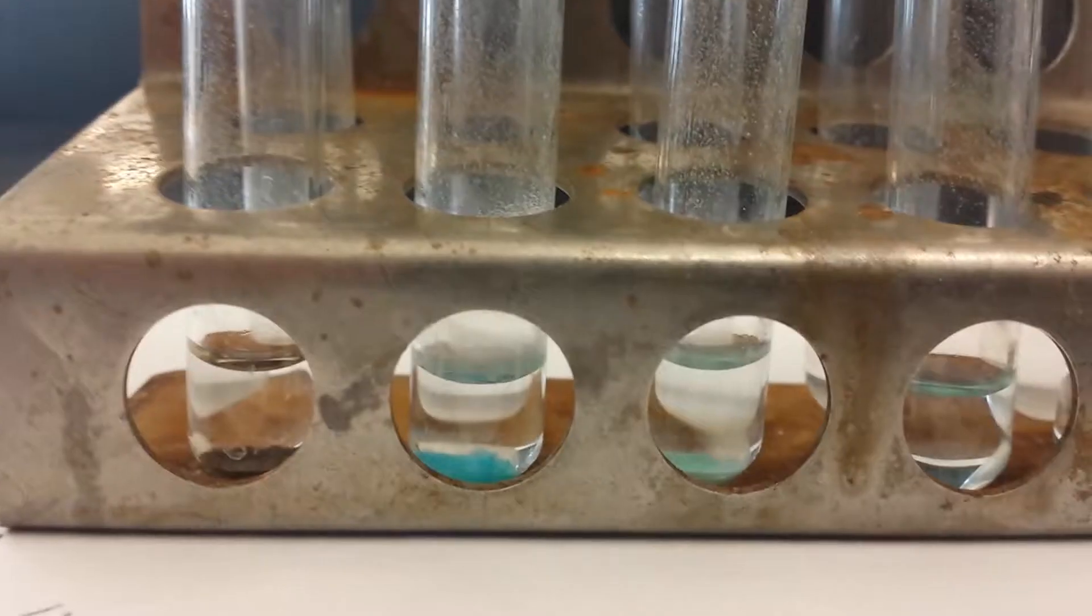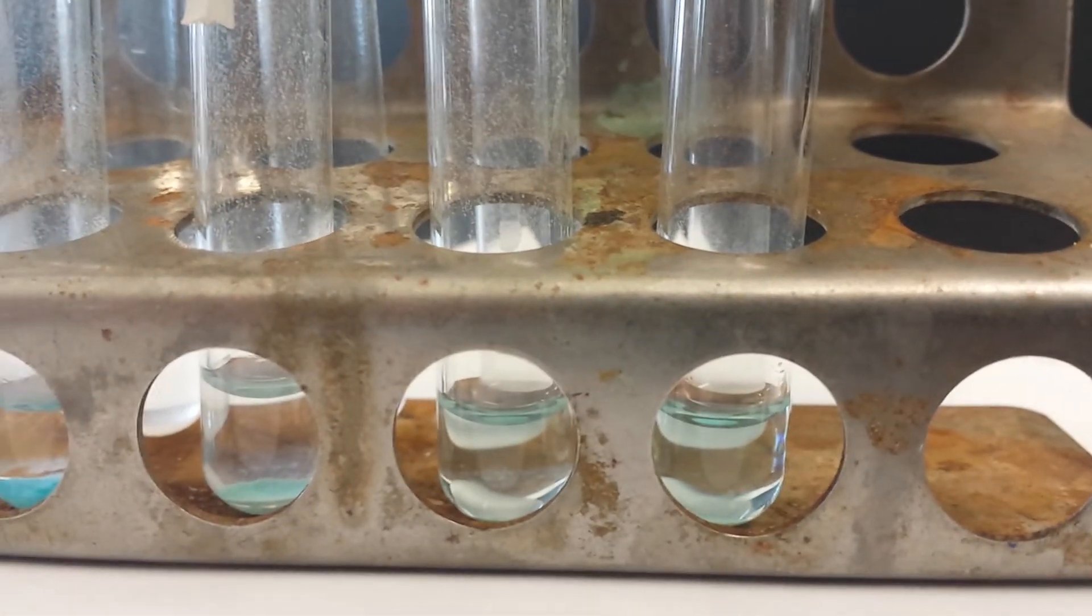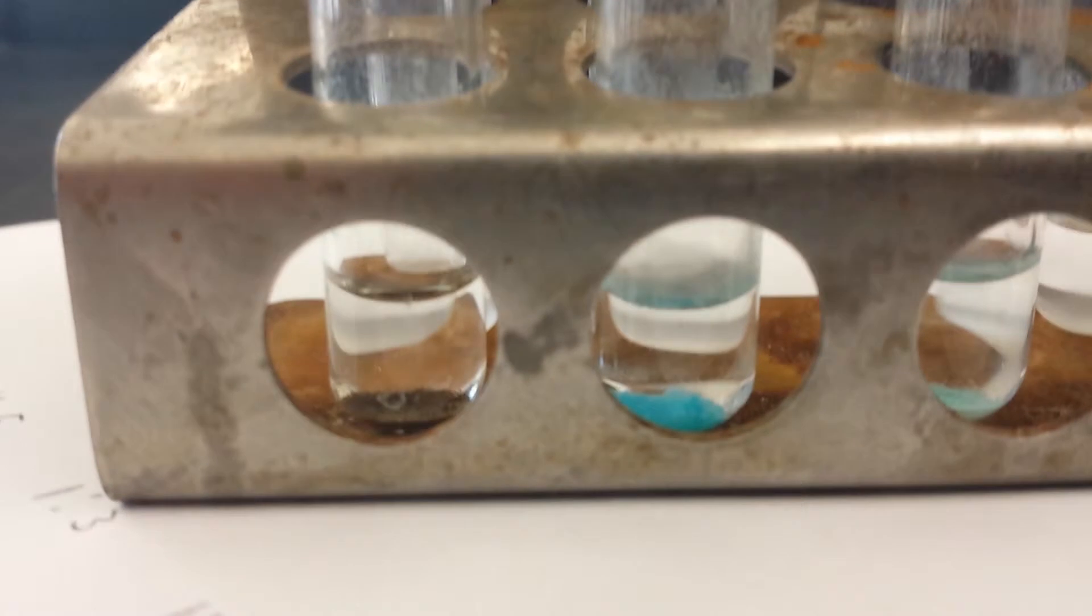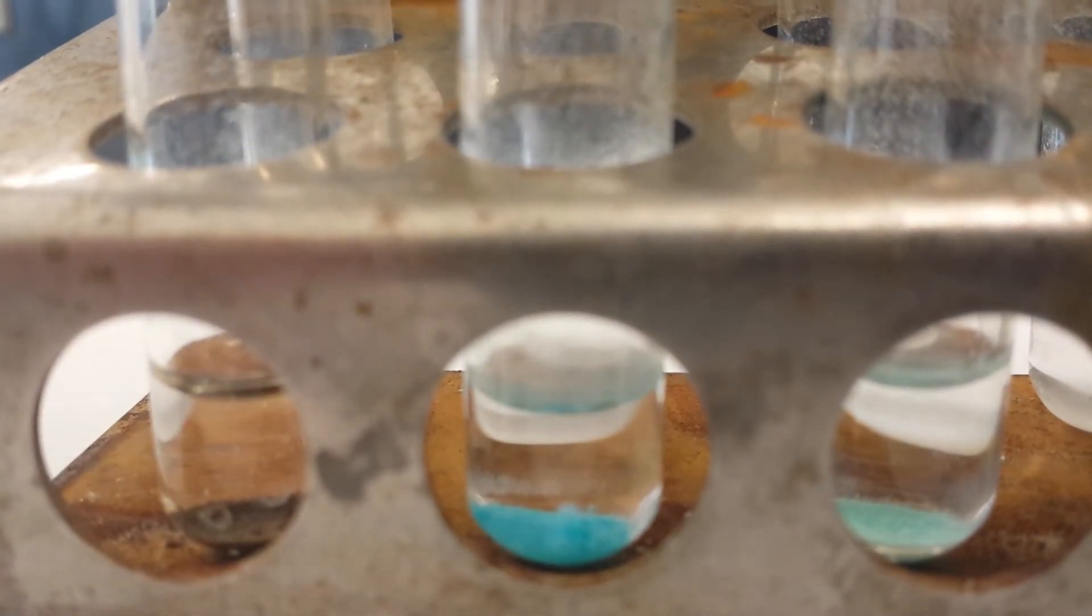If we compare the reactions of copper chloride and sodium hydroxide in order to make copper hydroxide, we see that the biggest precipitate is clearly this one, which is test tube number 7, in which the ratio was 1 to 2.